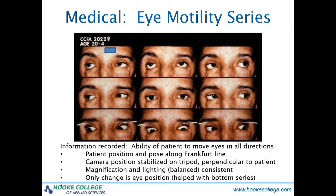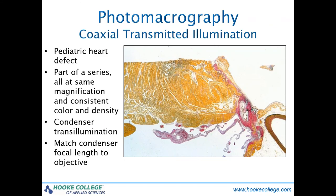Another important application includes before and after cosmetic surgery documentation. This image looks like a conventional photomicrograph, but it's not. This is from a photomicrographic series of images of a pediatric heart defect taken at about three times magnification, too low for use with the compound microscope. It was made with a simple microscope — a single objective lens on a bellows camera. A condenser transilluminator was used to provide maximum contrast and resolution. The resulting transparencies all had to be exactly the same magnification and exposure, demanding precise alignment of the optics and exacting calibration before photographing the entire series.